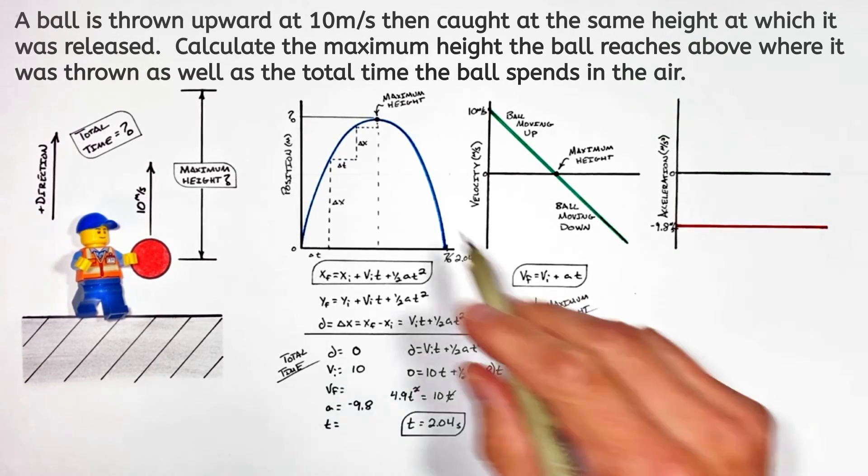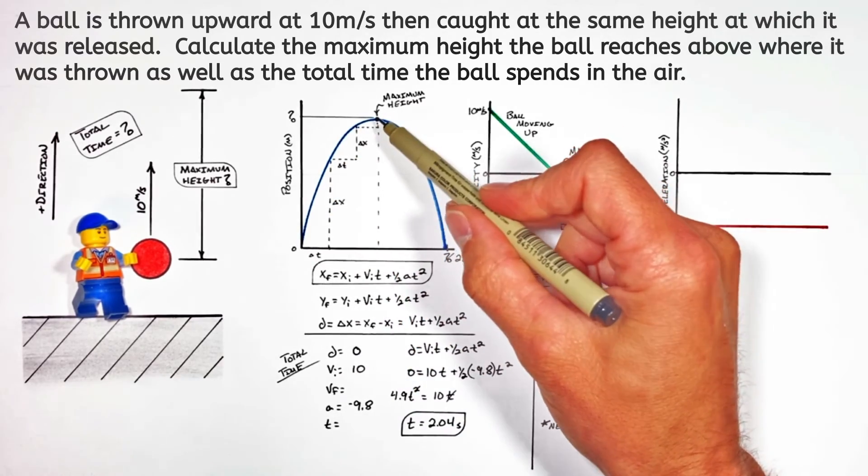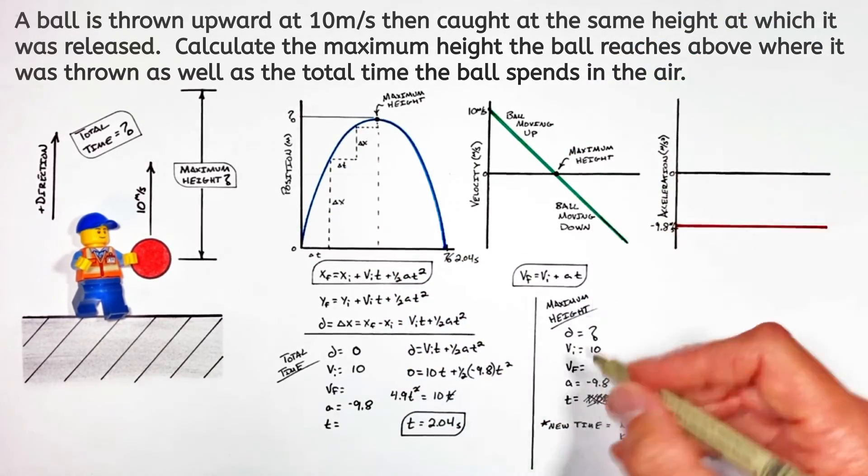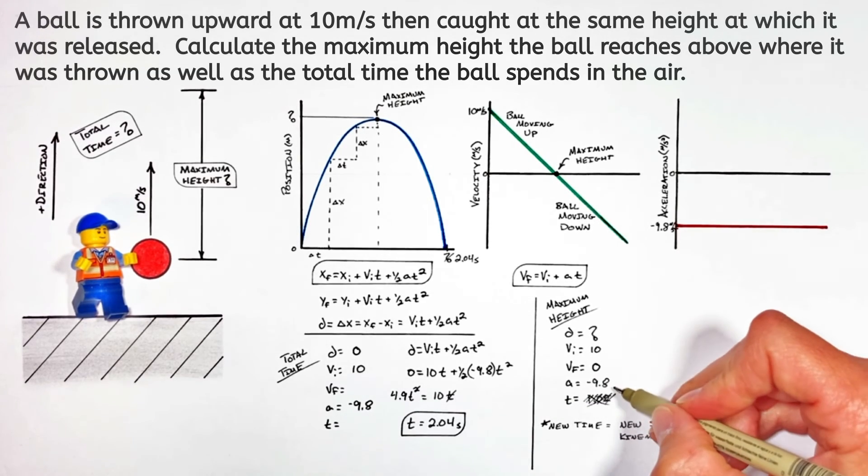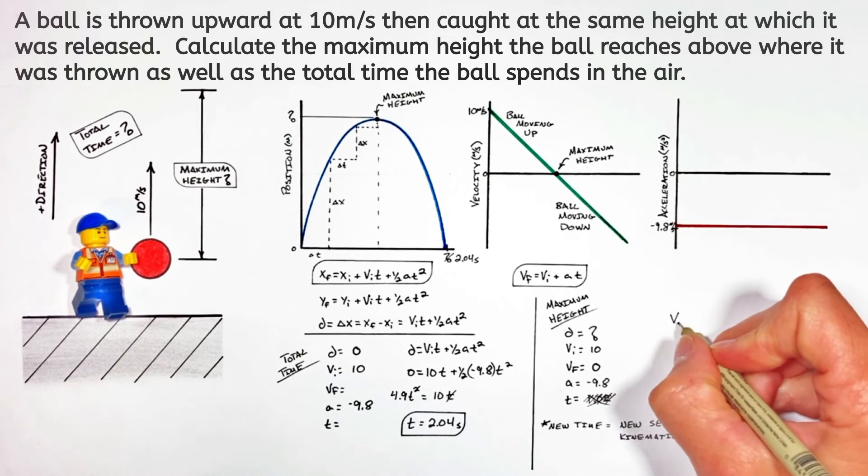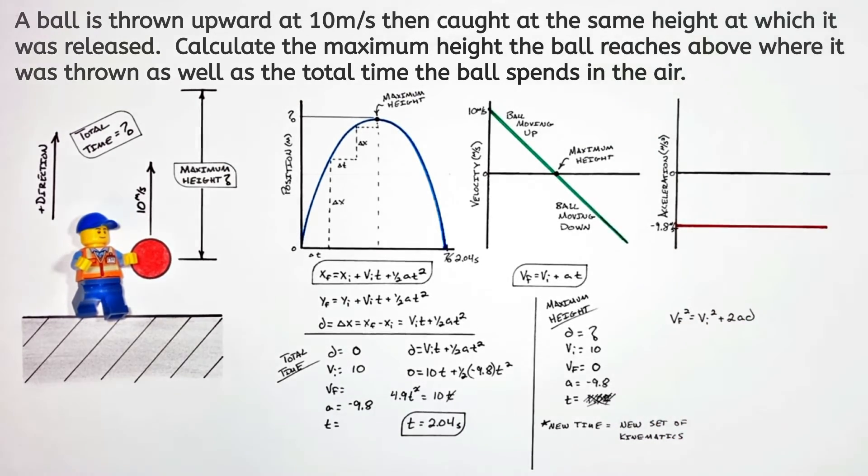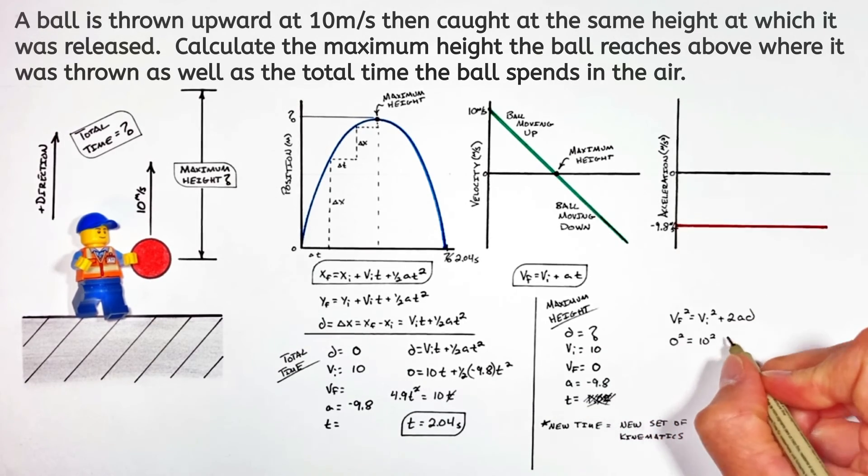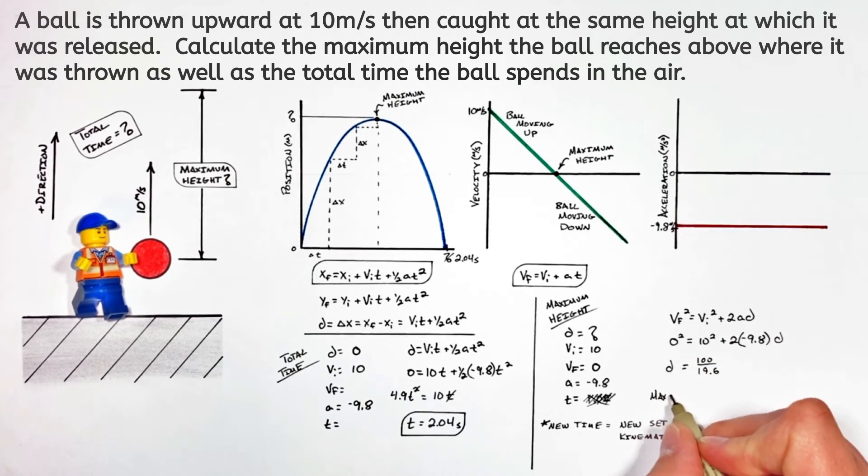The key to this problem and the reason we graphed all of the motion of this ball is so that you can see that the velocity of the ball at its maximum height is zero. Given that piece of information, we now have enough kinematic variables to use a different kinematic equation that doesn't involve time to solve for the displacement. Plugging our values into this kinematic equation, we find the ball moves upward a maximum displacement of 5.10 meters.